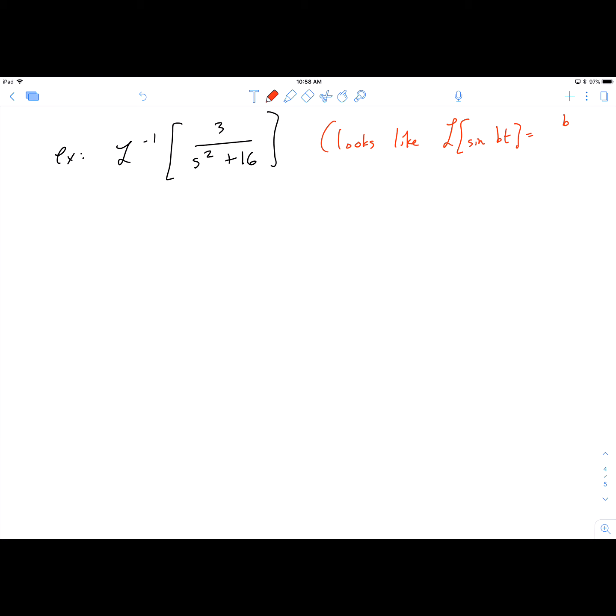So this looks like the Laplace transform of sine of bt, which is b over s squared plus b squared. Looking at that, you recognize that s squared plus b squared looks like this, which tells you that b should be 4. So we expect to have this be the sine of 4t.